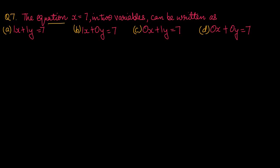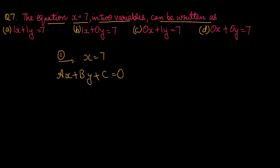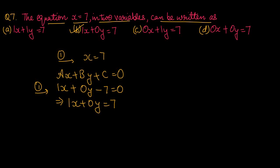Question number 7: the equation x equals to 7 in two variables can be written as? Two variables में equation ऐसे represent होती है: ax plus by plus c equals to 0। तो इसको लिख सकते हैं 1x plus 0y — और 7 जो right hand side में है वो left hand side में minus हो जाएगा — यानी 1x plus 0y equals to 7। Option number B is the right one.